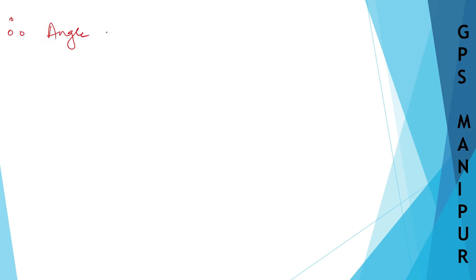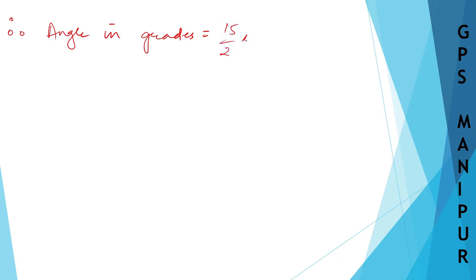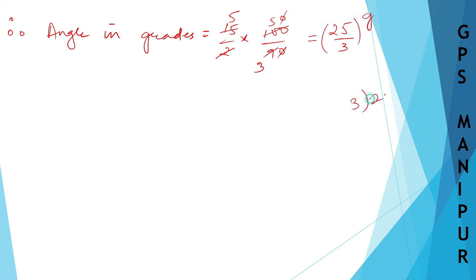Let us also convert into grads. Angle in grads = 15/2 × 100/90. Simplifying: 15 × 100 = 1500, divided by 2 × 90 = 180, gives 1500/180 = 25/3 grads. Dividing 25 by 3: quotient is 8 with remainder 1, so it can be written as 8 and 1/3 grads.